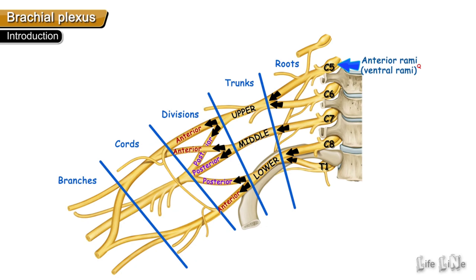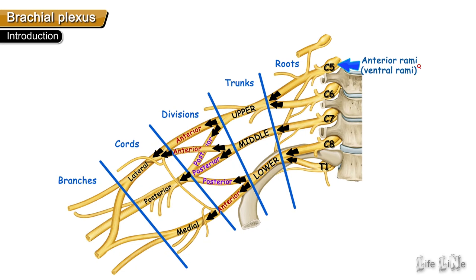All the posterior divisions unite to form the posterior cord. The anterior divisions of the upper trunk and middle trunk unite to form the lateral cord. The anterior division of the lower trunk continues as the medial cord of the brachial plexus.